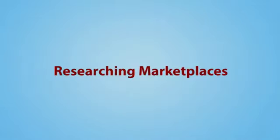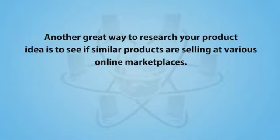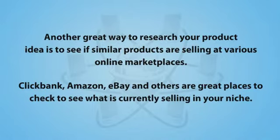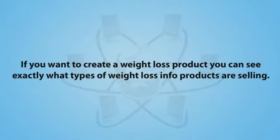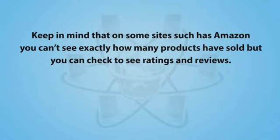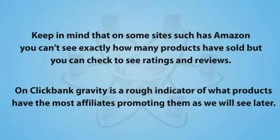Number four, researching marketplaces. Another great way to research your product idea is to see if similar products are selling at various online marketplaces. ClickBank, Amazon, eBay, and others are great places to check out to see what's currently selling in your niche. If you want to create a weight loss product, you can see exactly what types of weight loss info products are selling. Keep in mind that on some sites such as Amazon, you can't see exactly how many products have sold, but you can check ratings and reviews. On ClickBank, Gravity is a rough indicator of what products have the most affiliates promoting them, as we'll see later.